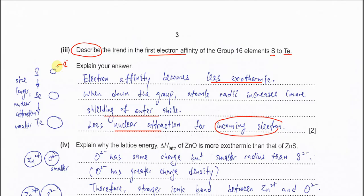When there is more shielding, then the nuclear attraction towards the incoming electron is reduced. The attraction of the sulfur is greater than the others because the nuclear attraction is greatest for sulfur. Tellurium has more electron shells, more shielding, so less nuclear attraction towards the incoming electron. That's why it will be less exothermic down the group.